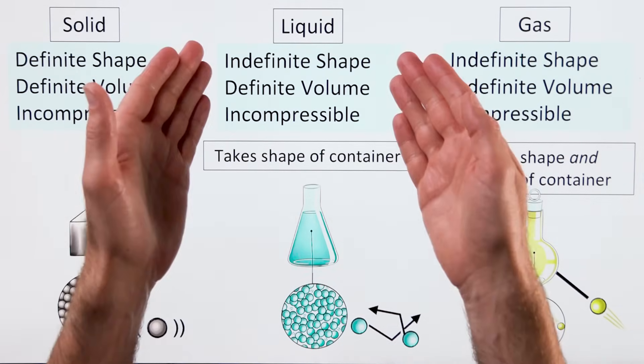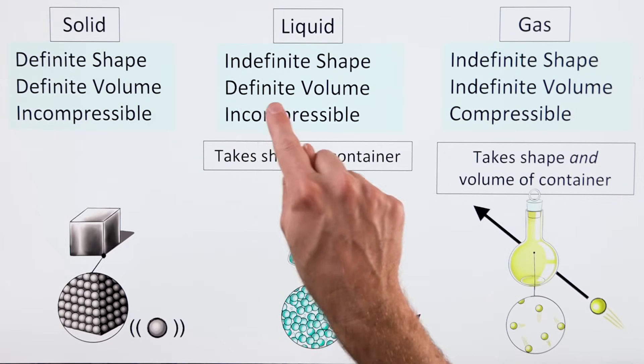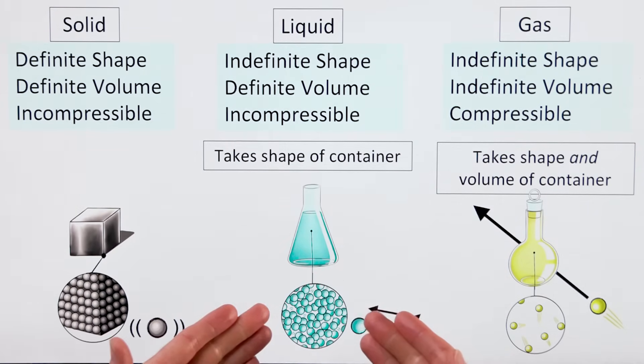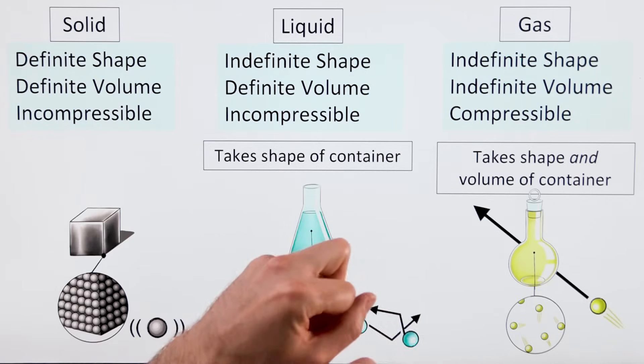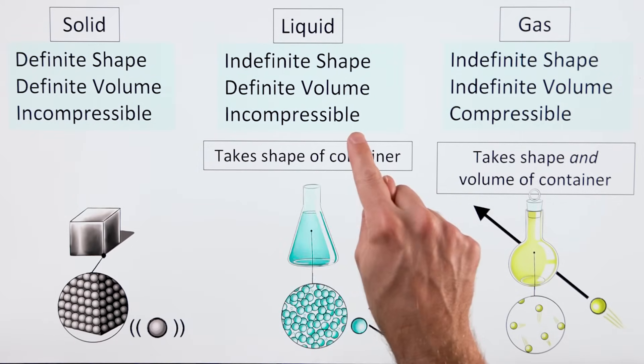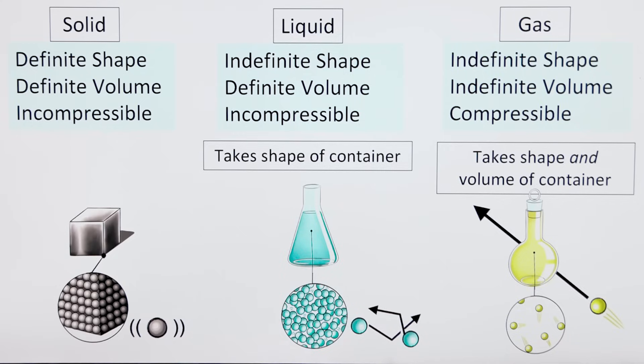A liquid has an indefinite shape but a definite volume. It takes the shape of its container. Its particles are close together but they do move around. Liquids can flow but they're hard to compress.